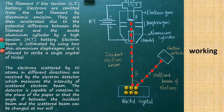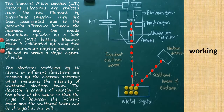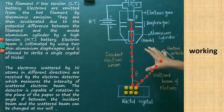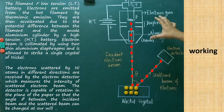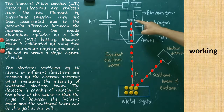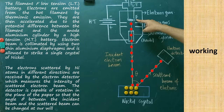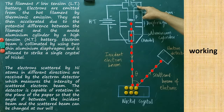Now we are going to see the working nature of the Davison and Germer experiment. I will explain the parts of the experimental arrangement one by one. The filament F, which is made up of tungsten, is heated by a low-tension battery.